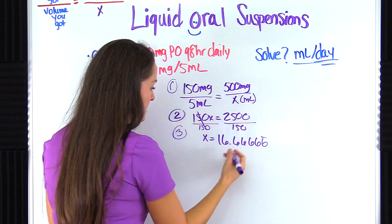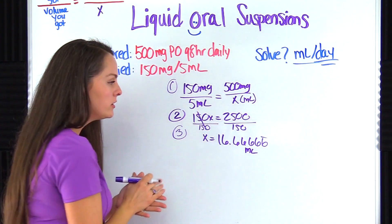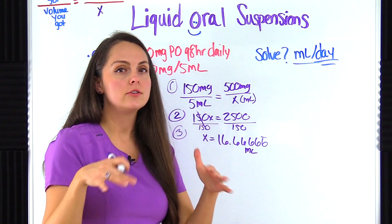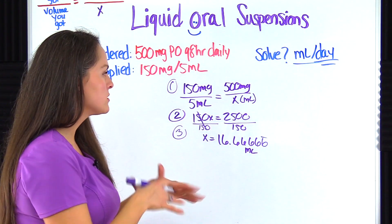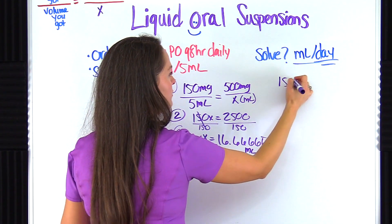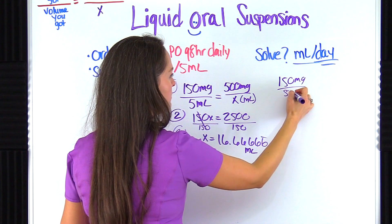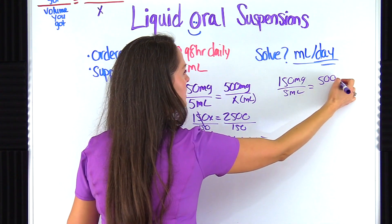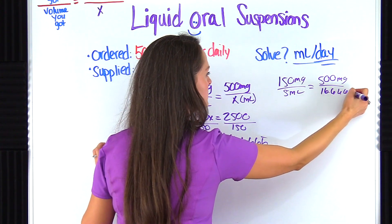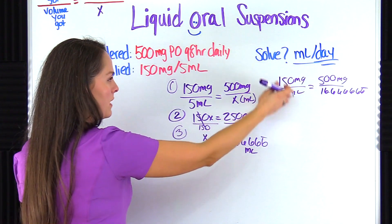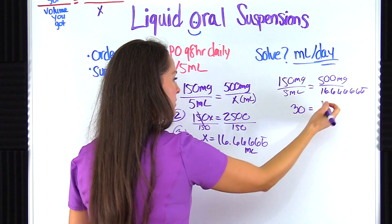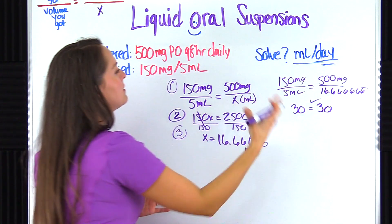Let's quickly verify: 150 milligrams over five mL equals 500 milligrams over 16.6666 repeating. Divide 150 by five and you get 30. Divide 500 by 16.6666 repeating and you also get 30. The two sides match, so our per-dose answer is confirmed.